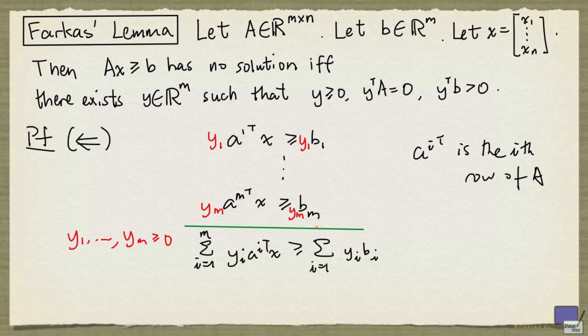But the left hand side is simply y transpose A times x, and the right hand side is y transpose B. So if y transpose A is 0, this is 0. And if y transpose B is greater than 0, this is going to be greater than 0.